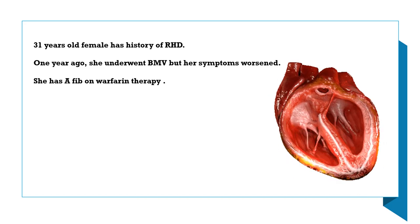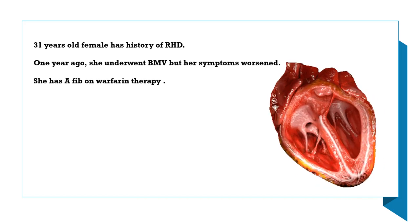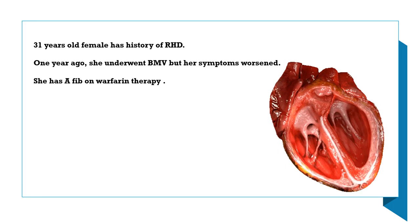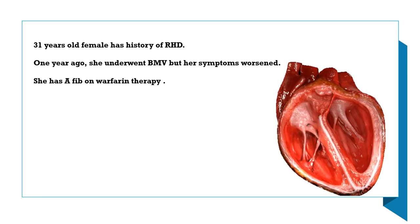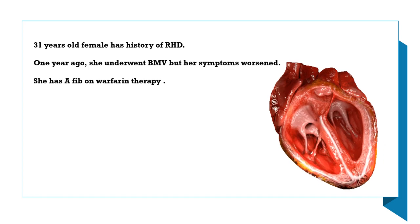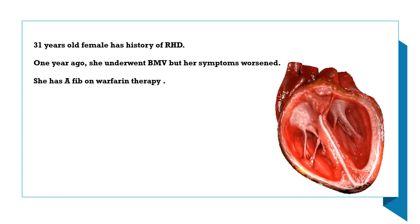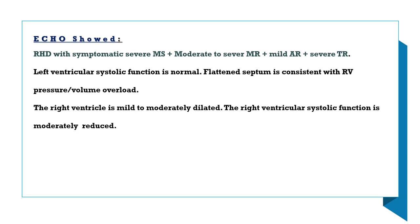The first case is a 31-year-old female with a history of rheumatic heart disease. One year ago, she underwent balloon mitral valvoplasty, but her symptoms worsened. She has a history of atrial fibrillation on warfarin therapy. Echo showed symptomatic severe mitral stenosis, moderate to severe mitral regurgitation, mild aortic regurgitation, and severe tricuspid regurgitation.